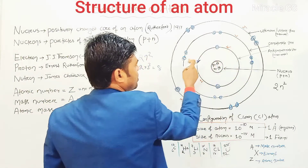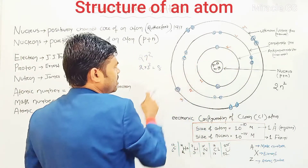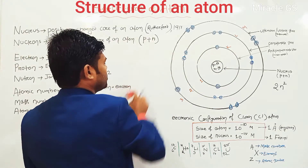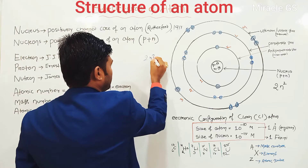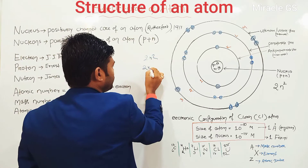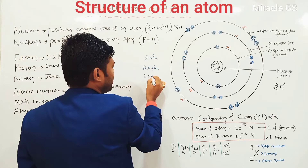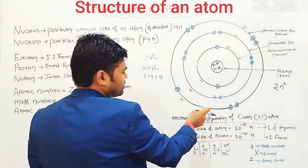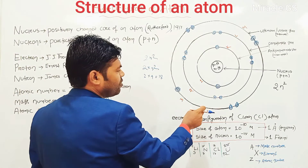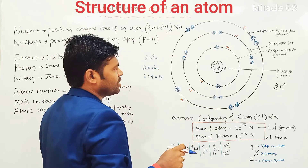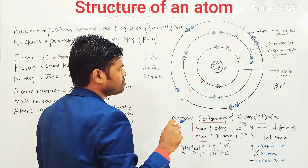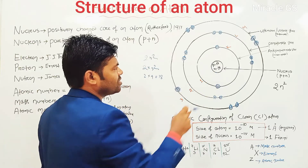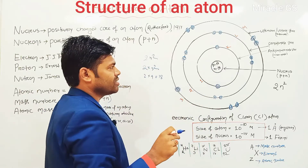2 squared is 4, 4 times 2 is 8 — so the second shell may have 8 electrons. The third shell may have how many? Using 2N squared formula: 2 into 3 squared equals 2 into 9 equals 18. Now, for example, in a chlorine atom — chlorine has proton 17, neutron 18, and electron 17. In an atom, the number of proton is equal to the number of electron.